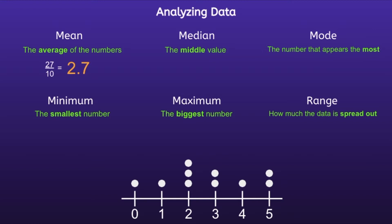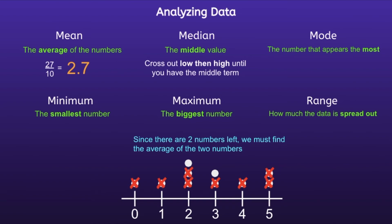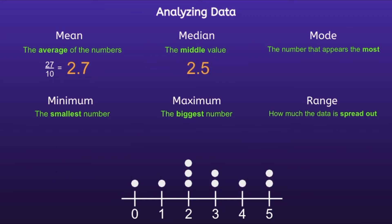Median — the middle value. In order to find the median, we will cross out low then high until you have the middle term. So first we cross out the lowest number, which is zero, and then the highest number, which is five. We continue going from low to high, until we have two numbers left. We have to find the average of those two numbers the same way we did with the mean. We add those two numbers: two plus three is equal to five, and then divide by the total number of terms — in this case, two. So five divided by two is equal to 2.5. So the median would be 2.5.